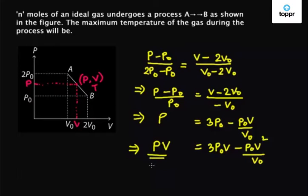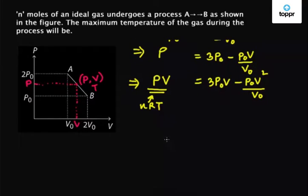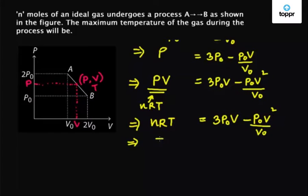So PV is nothing but nRT according to the ideal gas equation. So we rewrite this again to get nRT equals 3P0V - P0V² / V0. Dividing both sides of the equation by nR we get T equals 3P0V / nR - P0V² / (nR·V0).